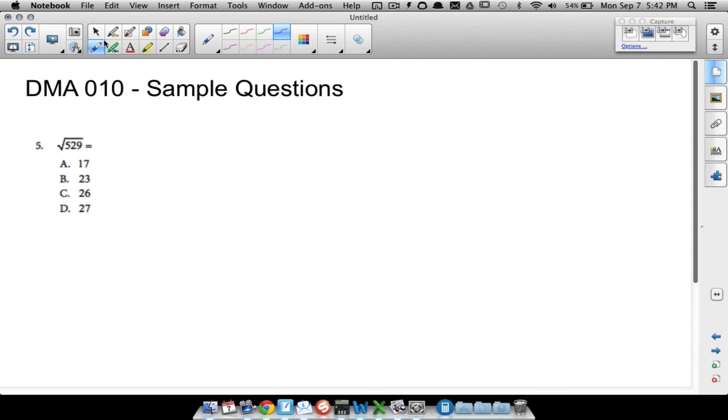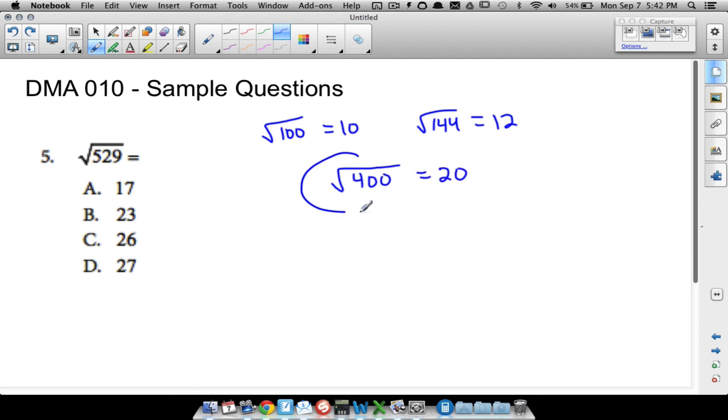One more sample question: the square root of 529. No calculator - there will probably be no calculator for the DMA 10 questions whatsoever. Finding this particular square root can be tedious, but since this is a multiple choice question, let me throw out a helpful tip. The square root of 100 is 10, the square root of 144 is 12. Maybe you know the square root of 400? That's 20. That right there is going to help you eliminate some things.